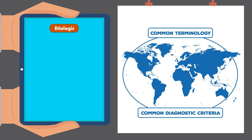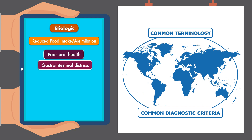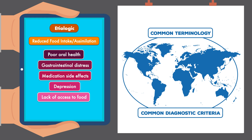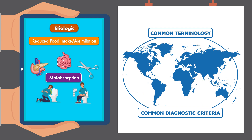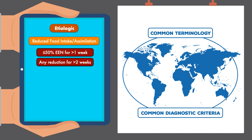Moving on to the etiologic criteria, we have reduced food intake or assimilation and inflammation. Reduced intake can have multiple causes, including poor oral health, gastrointestinal distress, medication side effects, depression, and a lack of access to food. Reduced assimilation is associated with malabsorptive conditions like short bowel syndrome, pancreatic insufficiency, bariatric surgery, and persistent vomiting or diarrhea. The specific criteria is less than or equal to 50% of estimated energy need for greater than one week, or any reduction for greater than two weeks.